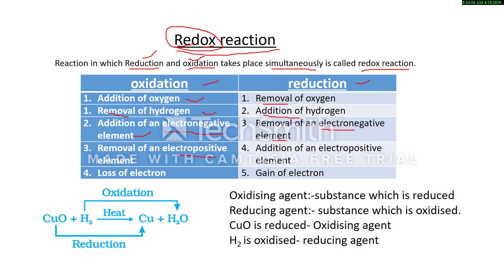Removal of an electropositive element is called oxidation, and addition of an electropositive element is called reduction. These terms — electronegative element and electropositive element — will be discussed in the chapter on classification of elements. Also, loss of an electron is oxidation and gain of an electron is reduction. However, in your syllabus, oxidation and reduction are based primarily on the addition or removal of oxygen and hydrogen.